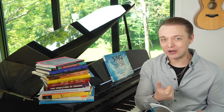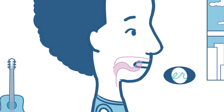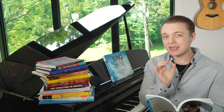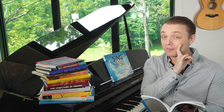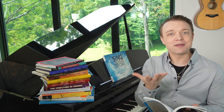That's the American rhotic R. Errr. The tongue curls up and back without quite touching the hard palate. Errr. From there, we keep the tongue in that curled position, and then we move from E to Errr to OO and back.